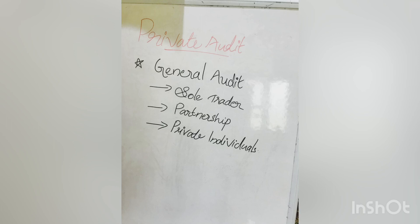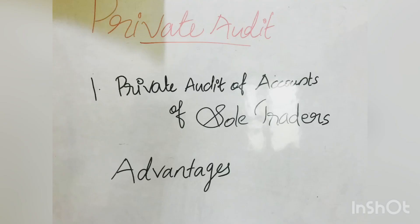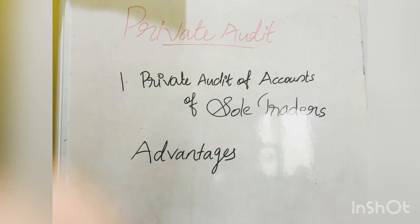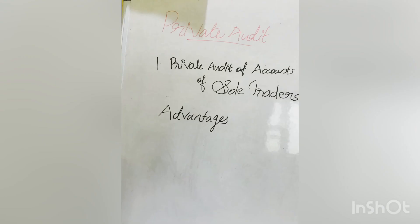The first type is private audit of accounts of sole traders. The conduct of audit of a sole trader is optional and not compulsory by law. The sole trader appoints the auditor under an agreement, and by this agreement the auditor must get clear instructions in writing from his client as to what he is expected to do. The scope, nature and duties of the auditor will depend upon the agreement.